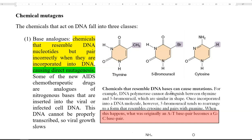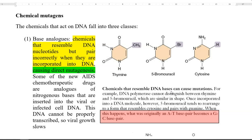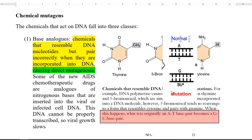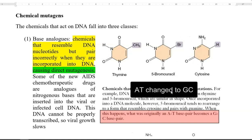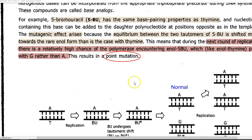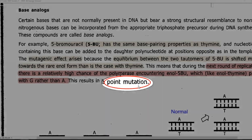DNA polymerase cannot distinguish between thymine and 5-bromo-uracil as both are in the same or similar shape. Once incorporated into the DNA molecule, the 5-bromo-uracil tends to rearrange its structure in such a way that it resembles cytosine. As a result, it can pair with guanine. Originally, the A-to-T base pairing is now changed into G-to-C base pairing. The type of mutation caused by base analogs is a point mutation.